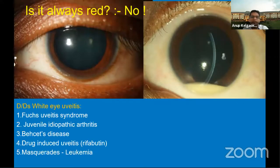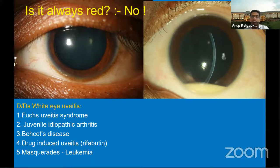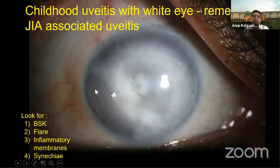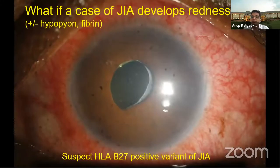But is the red eye the only presentation in uveitis? No — there are white-eye uveitides as well. As we see here, to the left is a case of Fuchs' uveitis syndrome and to the right is a case of Behcet's. Other conditions including juvenile idiopathic arthritis, drug-induced uveitis like rifabutin, or masquerades also present with a white eye. In childhood uveitis with a white eye, JIA is one of the diseases to look for. In such cases, we look for band-shaped keratopathy, flare as a marker of activity, inflammatory membranes in the anterior chamber over the iris, and both posterior and anterior synechiae.